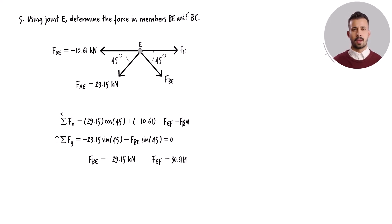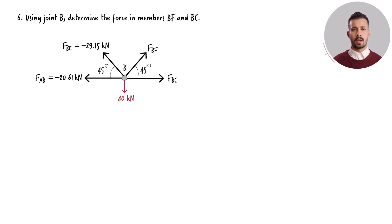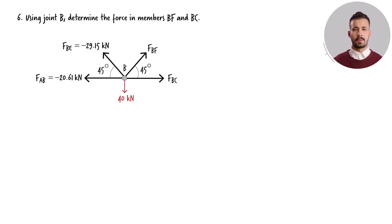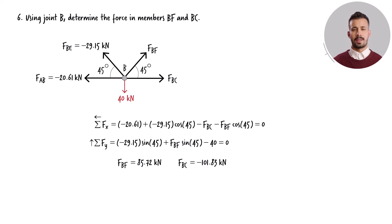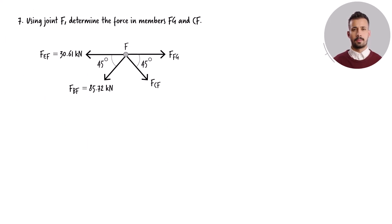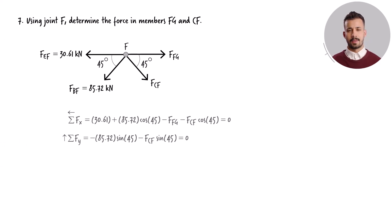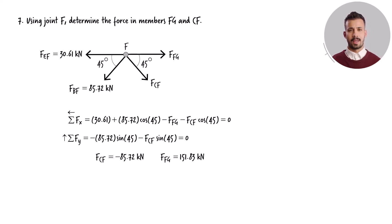Next, we examine joint B. Two unknown member forces are present at this joint. Here are the joint equilibrium equations; solving these equations for the unknowns, we get the results. Next, we move to joint F. Using the free-body diagram of the joint, we can write the following equilibrium equations. Calculating the unknown forces, we arrive at the solutions.